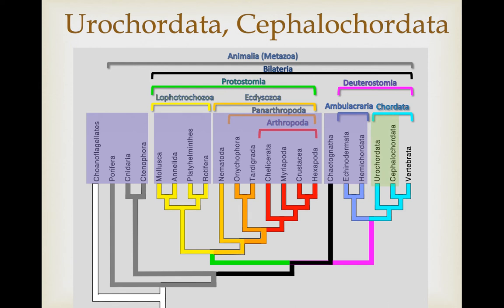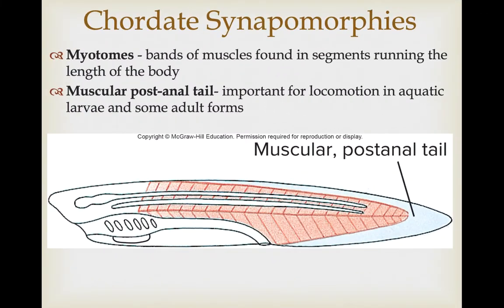Before we get into those lineages specifically, I want to talk about the synapomorphies associated with the chordata itself. There are five key developmental synapomorphies that all chordates share at least at some point during their development. These include, first, myotomes — muscle bands found in segments running the length of the body. It's a serial homology we've talked about previously, but specific to the muscle bands.